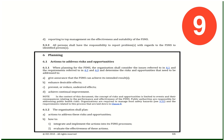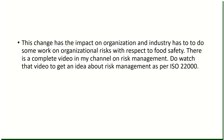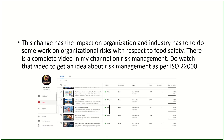Change number nine: risk management or risk-based approach has been added to the new standard. Previously it was only required for the production process flow in HACCP risk assessment. Now it is required for the complete organization — all departments, whether QC, procurement, sales and marketing, or HR, must determine internal and external issues, needs and expectations of interested parties, identify risks, and define action plans to mitigate them. Impact: organizations must do work on organizational risks with respect to food safety.